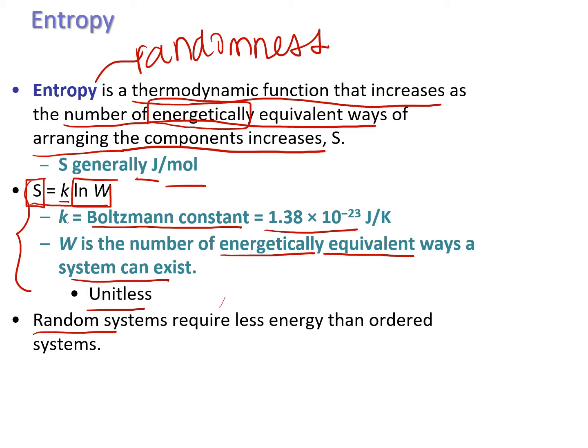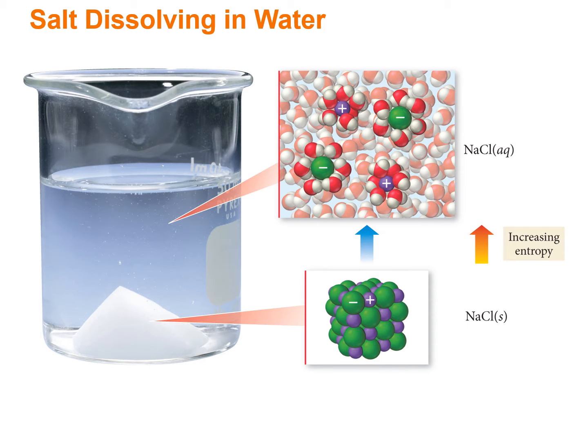Random systems require less energy than ordered systems, which makes sense. In order for something to be ordered, you have to put energy into it to overcome things like gravity and other forces in the universe that make it difficult for things to be ordered. Something random and not ordered is easy for it to happen on its own. This is another visual of entropy.